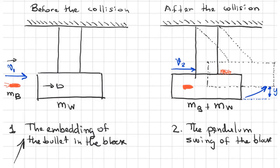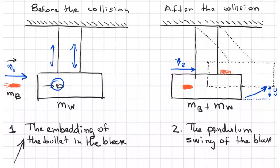We are considering that situation. Also, the supporting strings remain mainly vertical, because the process when the bullet gets into the block is really fast — we consider that the strings remain nearly vertical. So we have horizontal forces that are neglected; they are negligible. That means that we don't have horizontal forces on this part of the problem.